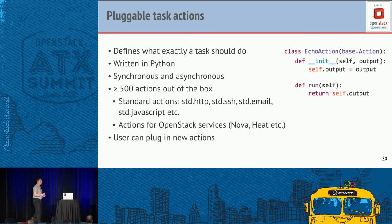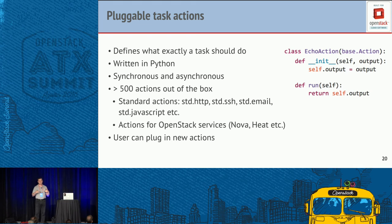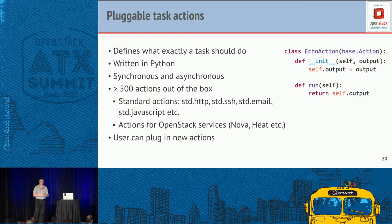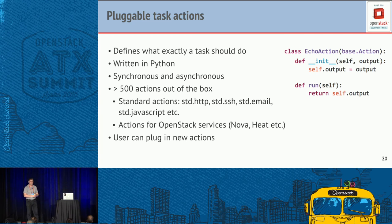Pluggable task actions: every task is associated with an action. The analogy is simple — an action is like a function with a name, parameters, and a return value. A task is a call of that function. Out of the box Mistral comes with around 1,000 actions: simple ones like making HTTP requests, doing SSH, sending emails via SMTP, and executing JavaScript — which is very powerful for in-workflow data transformation and is heavily used by some of our users.